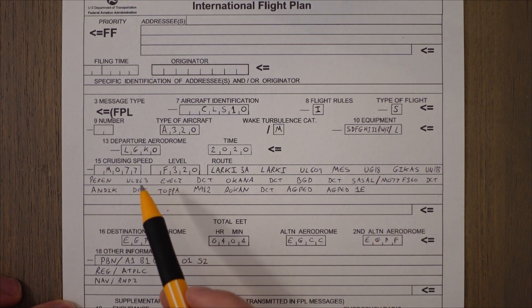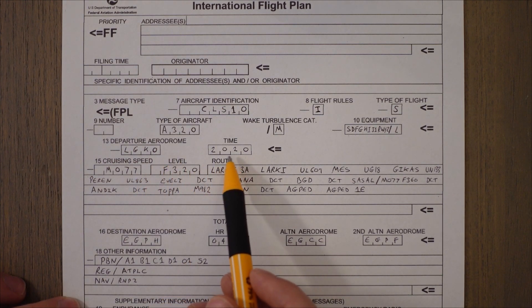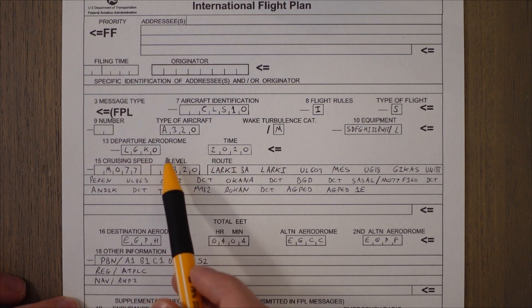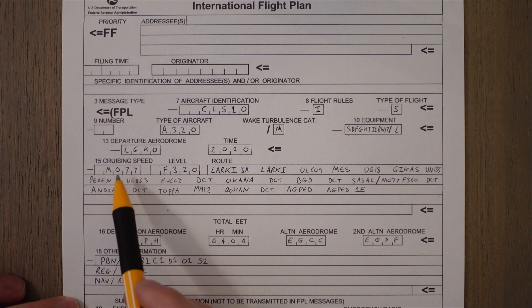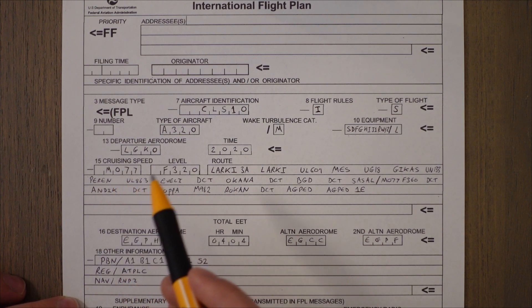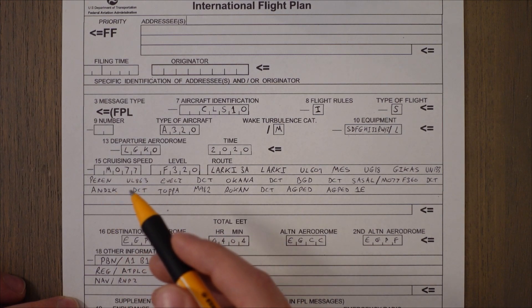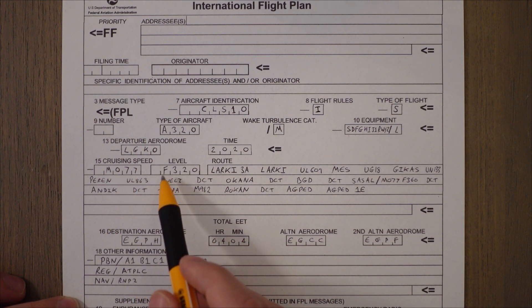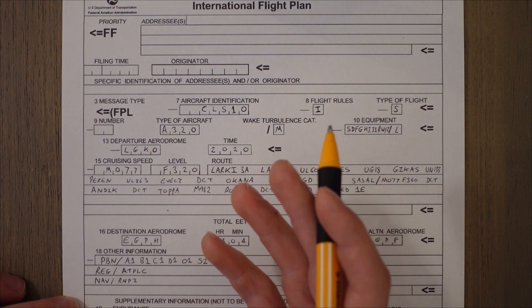13 is the departure aerodrome in the standard four letter ICAO identifier and the time that we plan to leave it in UTC. So LGKO is Kos in Greece. Then we go down to our cruising speed. In our case it's going to be Mach 0.77. It could also be an N at the start for knots or K for kilometers per hour. And we're going to flight level 320. This could be A for altitude as well. There's a few different letters that can go at the front.